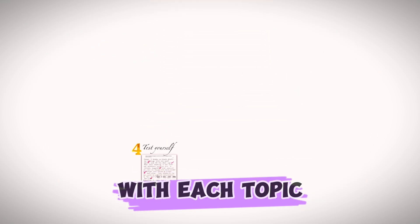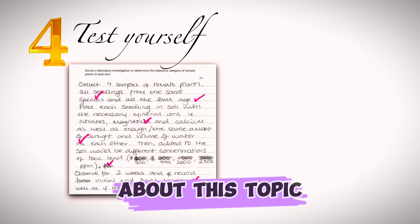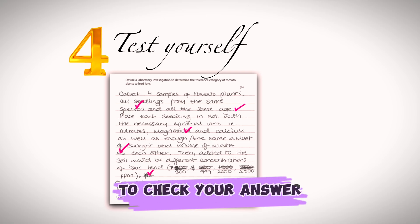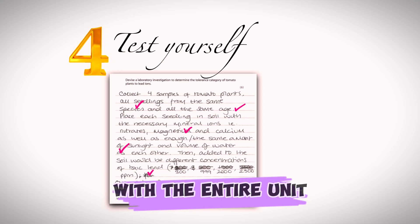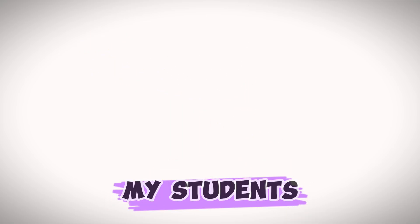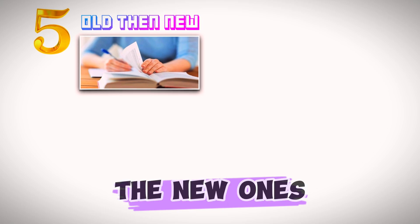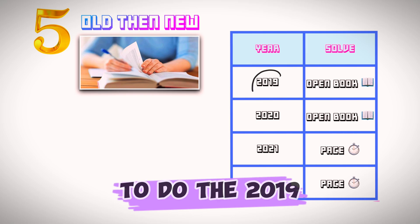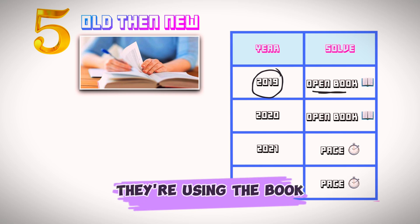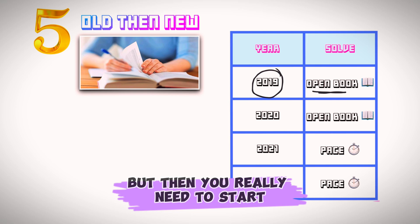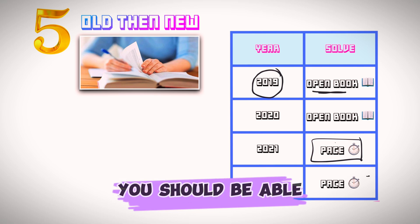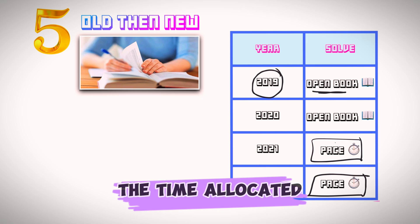Try to test yourself once you're done with each topic — for example, after covering biological molecules, take a test on that topic and mark it honestly. Ideally, have a teacher or expert check your answers. Once you've finished the entire unit, start doing full exam papers — old ones first, then newer ones. Begin with open-book attempts, then pace yourself to finish 10 to 15 minutes before the allocated time, leaving room to revise.